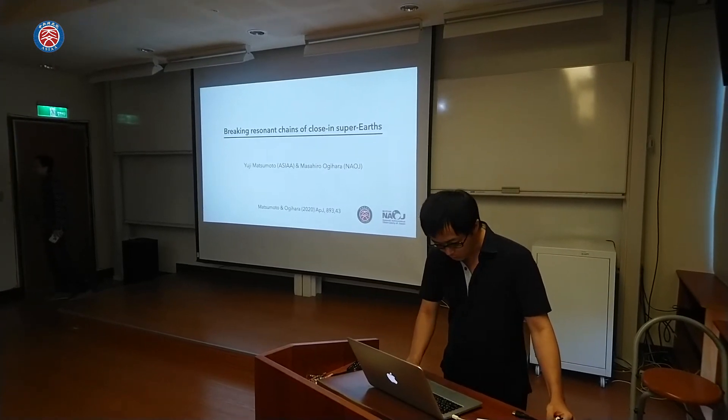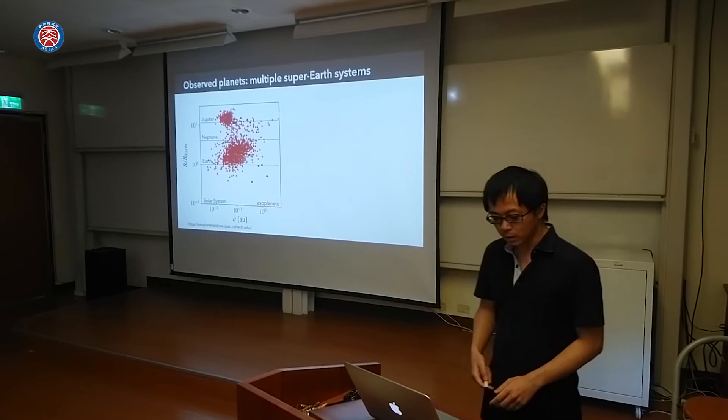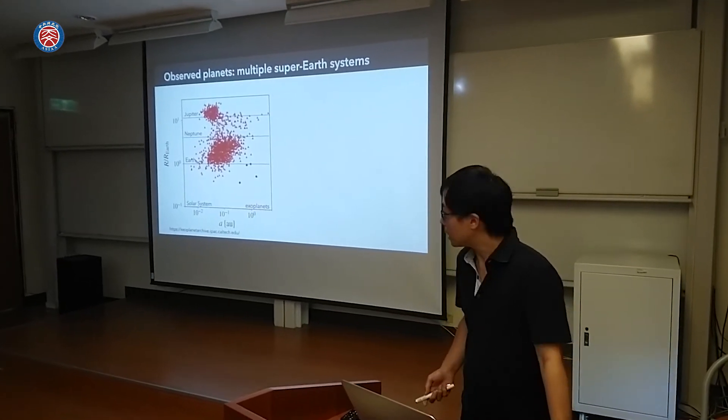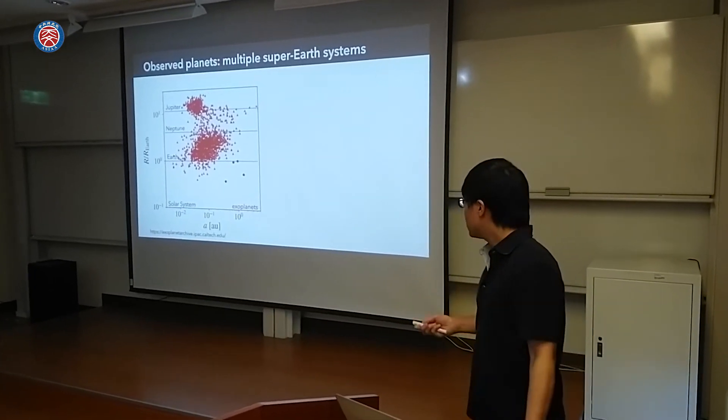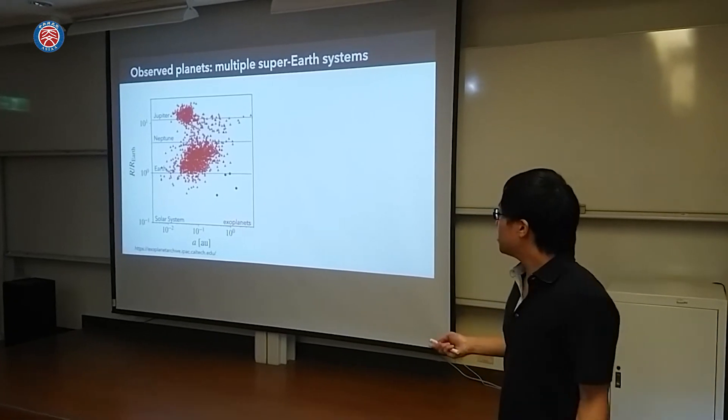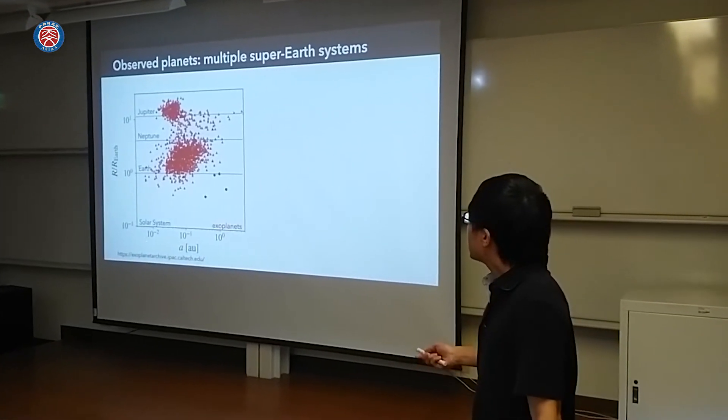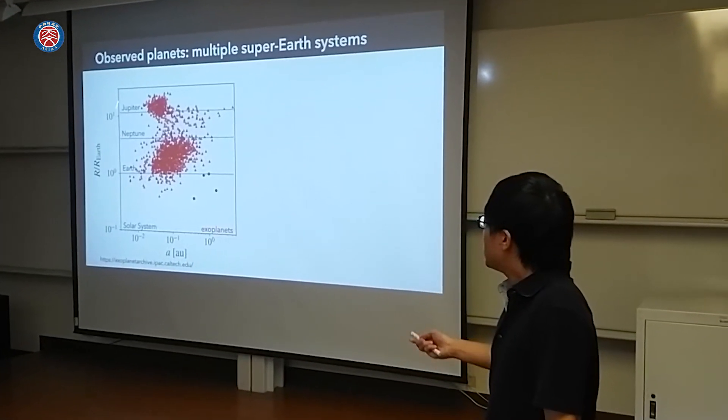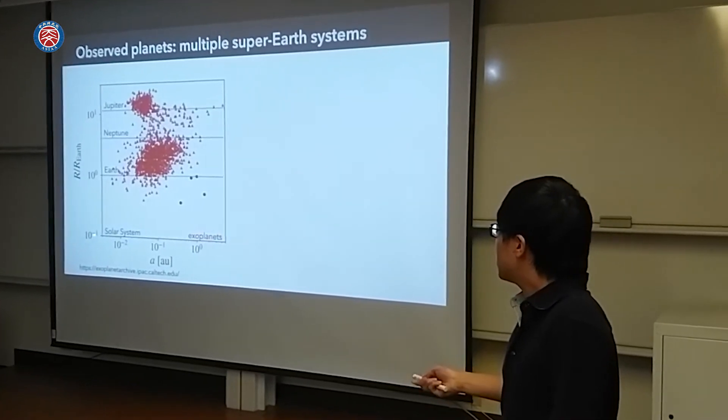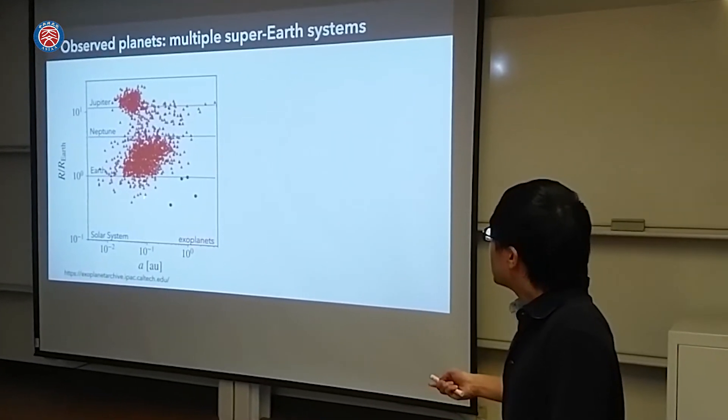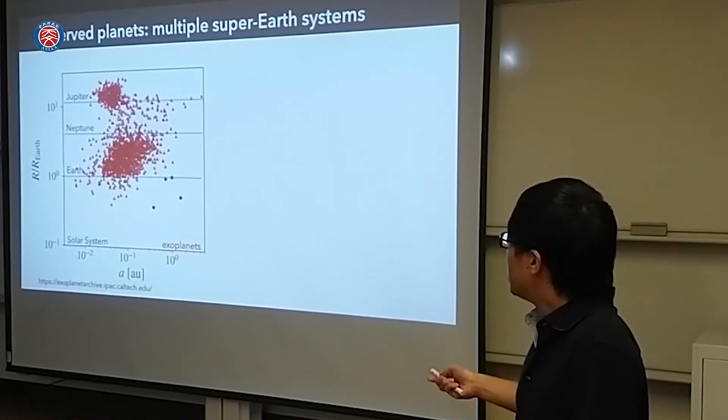Super-Earths are slightly larger than Earth's planets. This figure shows the planets. The y-axis shows the planets, and x-axis shows the axis. There are many super-Earths. These are outside or outside rather than outside planets.